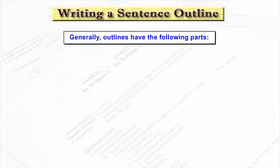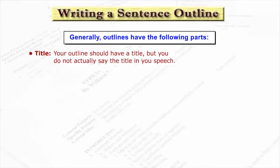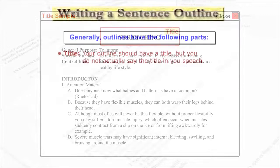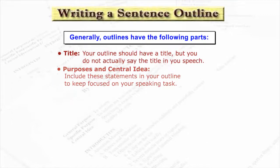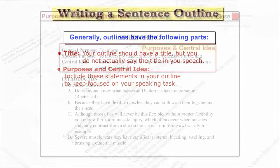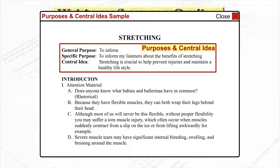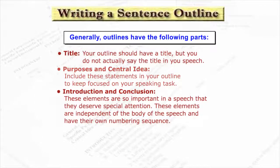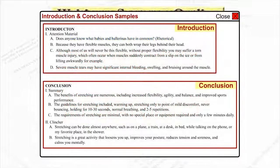Generally, outlines have the following parts. Title: your outline should have a title, but you do not actually say the title in your speech. Purpose and central idea: include these statements in your outline to keep focused on your speaking task. Introduction and conclusion: these elements are so important in a speech that they deserve special attention. These elements are independent of the body of the speech and have their own numbering sequence.